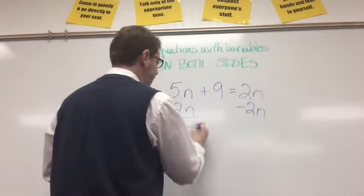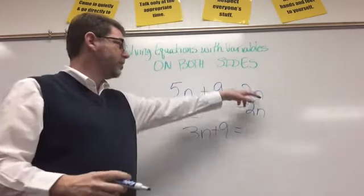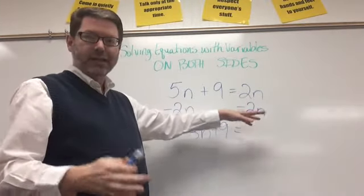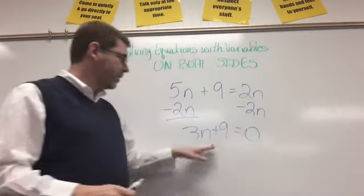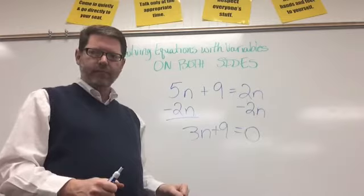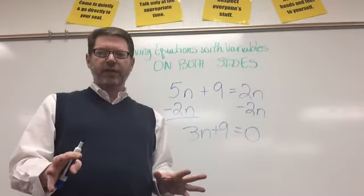So over here I have 3n plus 9 equals, well what's 2n minus 2n? That's 0. Can I do that? Absolutely. So 3n plus 9 equals 0. 2n minus 2n is 0. That's okay. Don't freak out about that.